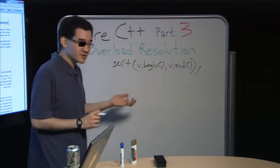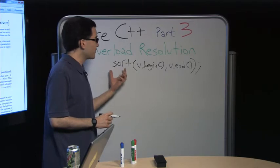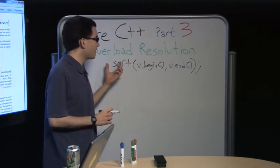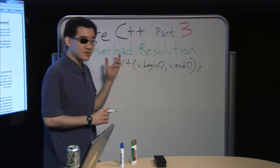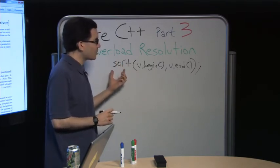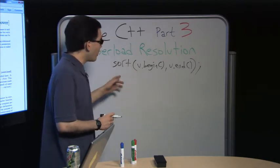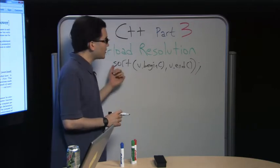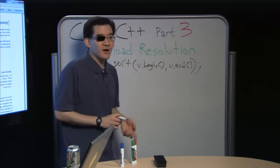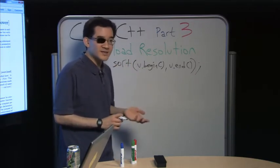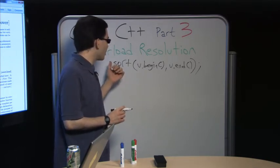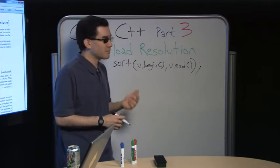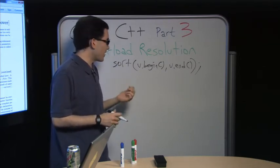Then template argument deduction runs, as we saw in Part 2 — it figures out that you mean sort with random access iterators. And finally, overload resolution runs, because what happens if there are multiple overloads of sort? In fact, there are. There's a sort taking two arguments, first and last, and then there's another one taking a comparator. It defaults to doing std::less, the less-than comparison, but you can also customize it and say you'd like to sort in reverse order by greater-than.